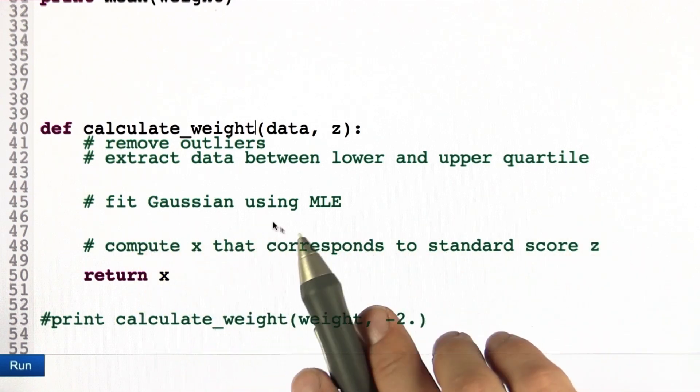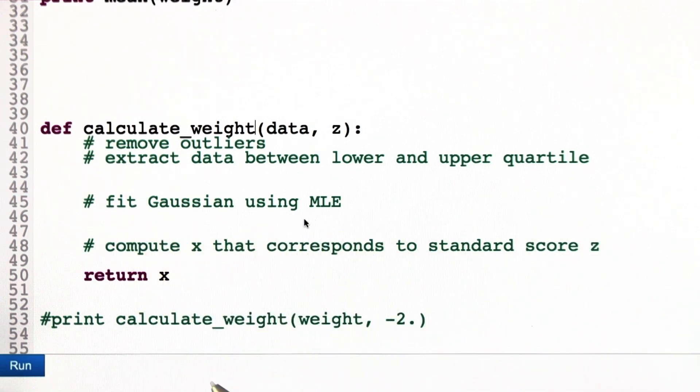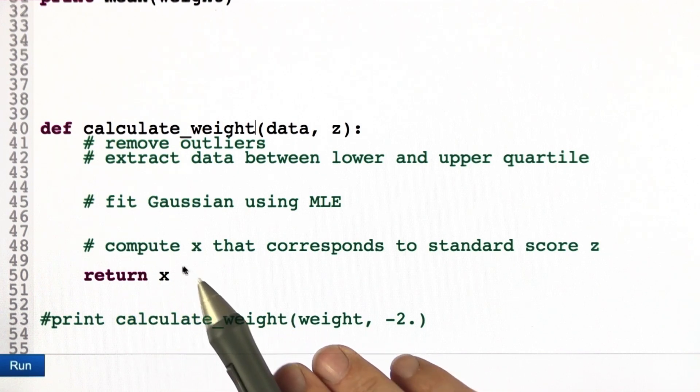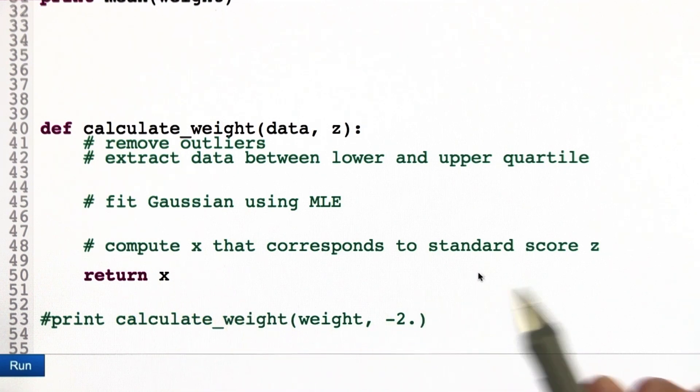Then I want you to fit a Gaussian using the maximum likelihood estimator. And from that, I want you to compute the value x that corresponds to the standard score z. So, I'm giving you not just the weight statistics, the weight data, but also where my actual weight is. If you plug in the standard score of minus two, which is two standard deviations below the mean of the data of people estimated, you'll find out my actual weight this morning. It's amazingly accurate.